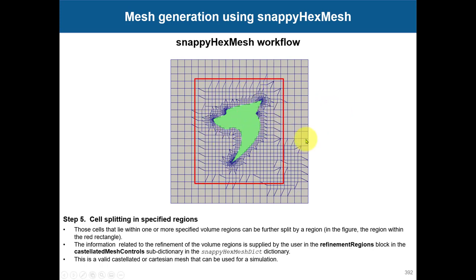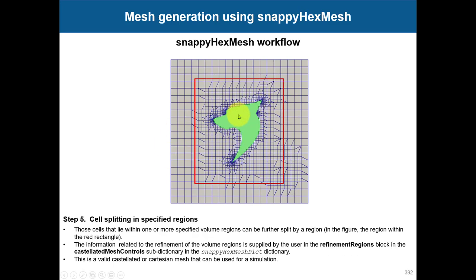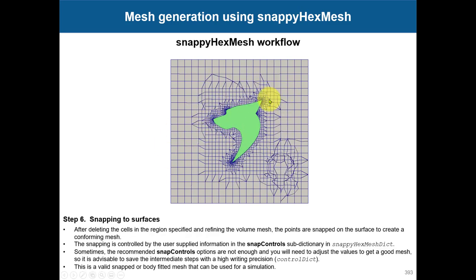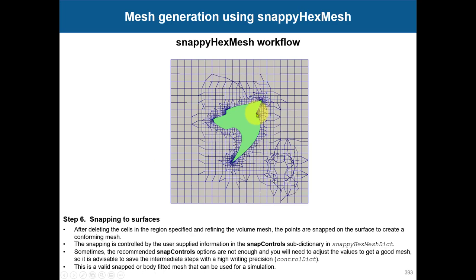All three steps - castellation, snapping, and layer addition - produce valid meshes and can be done sequentially. You can do the first step, check that your mesh is okay, then start the next step from there. You don't need to do all three steps at the same time.